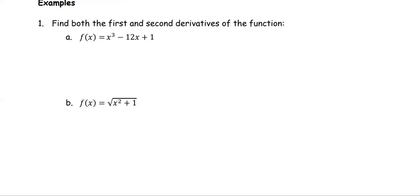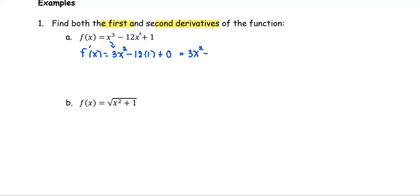For the first example, we are going to find both the first and second derivatives of the given functions. For the first one, f(x) equals x cubed minus 12x plus 1. Using the power rule, the first derivative f prime of x equals 3x squared. The constant multiple 12 times x to the first gives derivative 1, and the constant term's derivative is 0. Therefore, the first derivative is 3x squared minus 12.